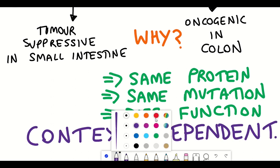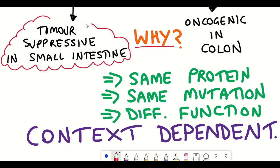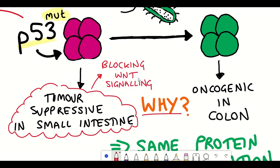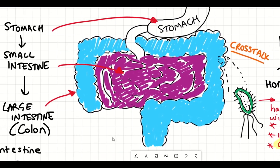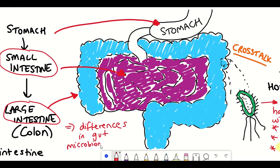But it raises the question of why and how this is happening. The authors wanted to explore this further, and they found that mutant p53 was actually blocking the Wnt pathway in the small intestine. But why was it not blocking it in the large intestine as well? There are a lot of differences between the small intestine and the colon, but a major difference is the abundance of the gut microbiome, which the authors hypothesized could be playing a role in the effect they were seeing.